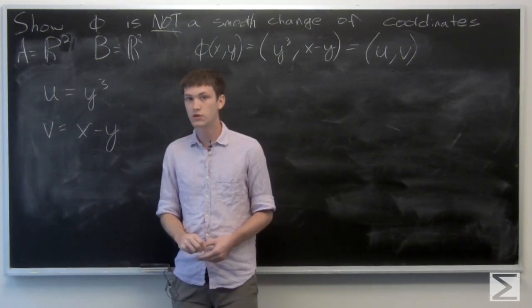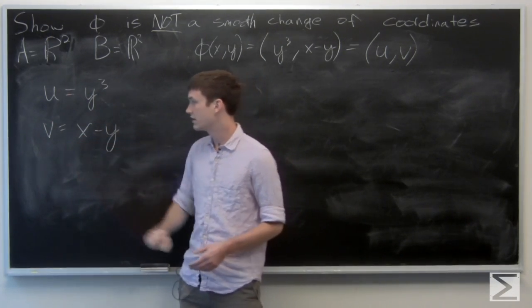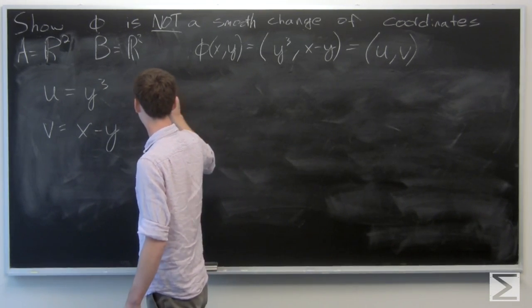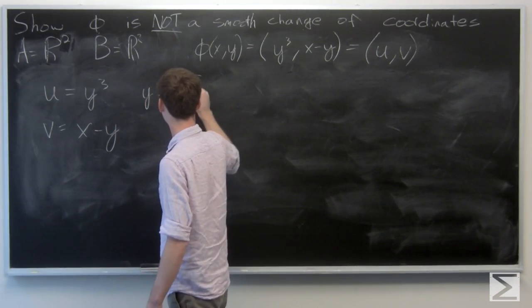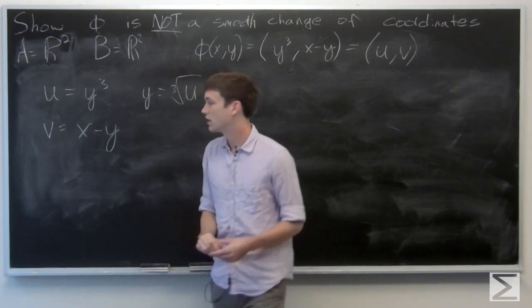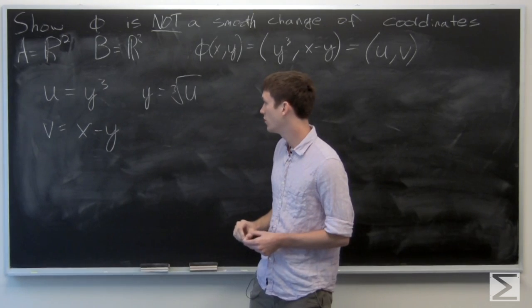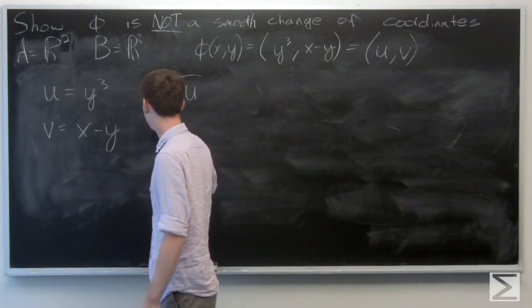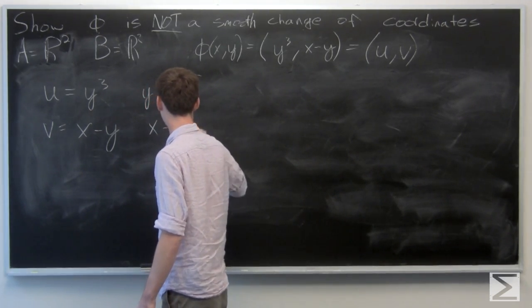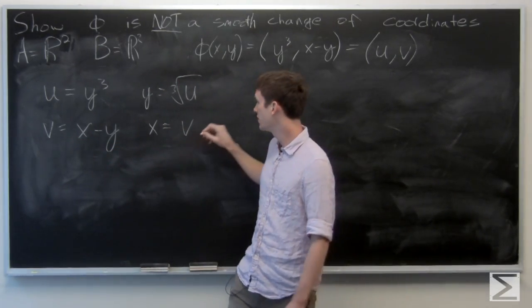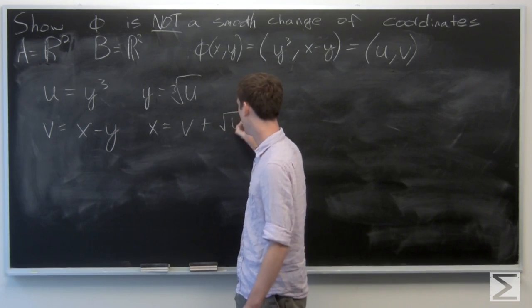So u equals y³ and v equals x minus y. We can easily calculate that y is the cube root of u, and then x is v plus y, which is v plus the cube root of u.